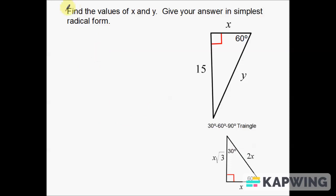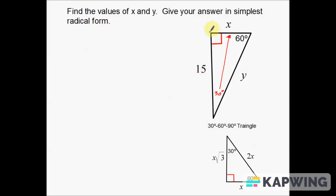Same directions for the second example — find the values of x and y in simplest radical form. First thing we've got to do is identify what side they gave us. I have this 15 here and I've got to figure out what side that is. The only angle given is 60 degrees, which means the angle down here is 30 degrees. The 30 degrees is the smallest, which makes x the short leg and y the hypotenuse. So the side they gave me — the 15 — is the longer leg.